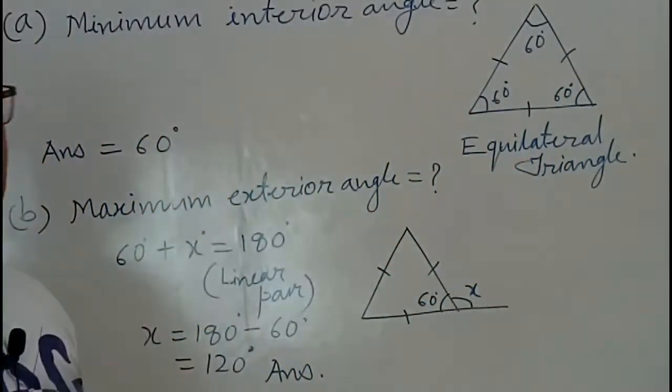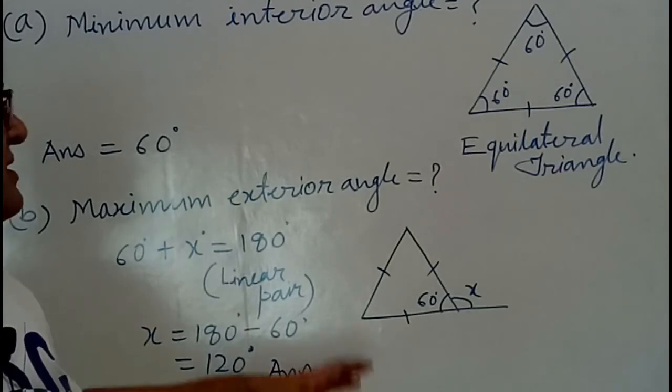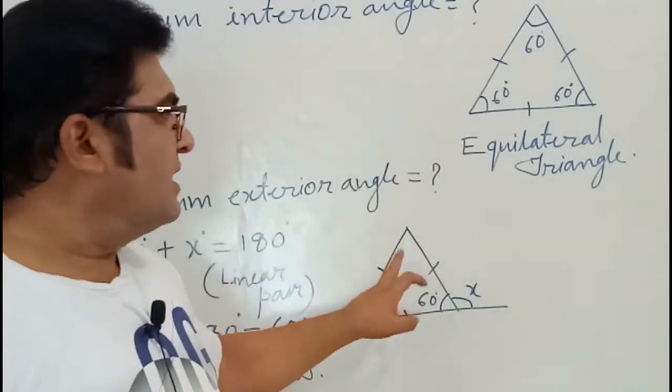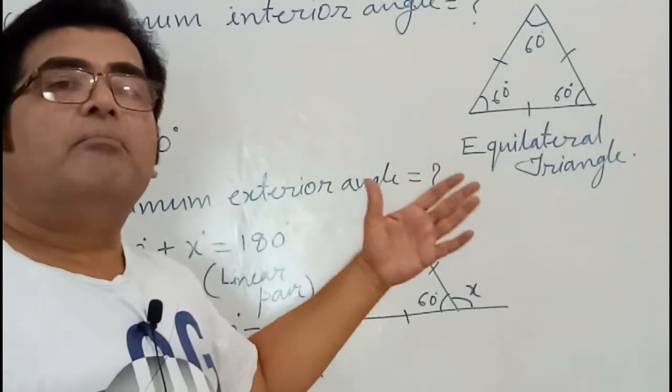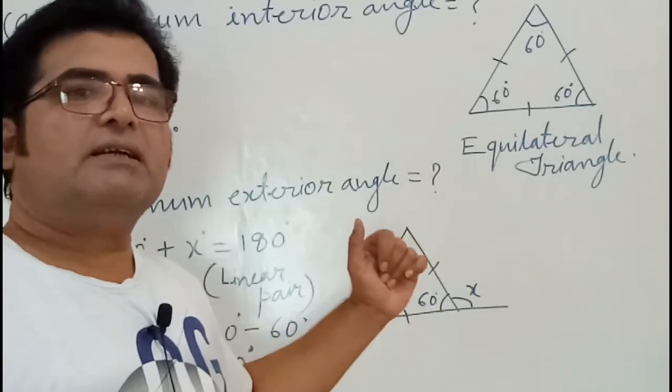Again, the equilateral triangle comes into consideration because the regular polygon which has the minimum interior angle will have the maximum exterior angle.